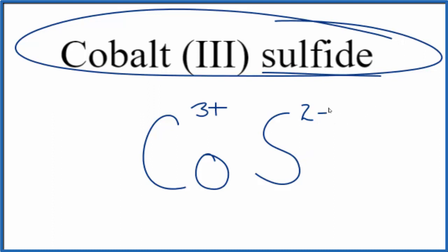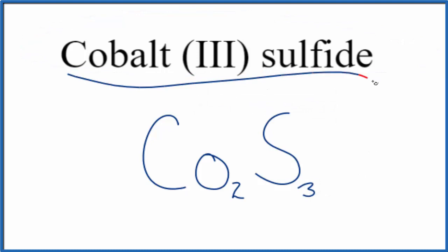We can use the crisscross method to help us out. We could put the 2 down here, and then put the 3 over here, get rid of this. And the formula for cobalt-3-sulfide is CO2S3.